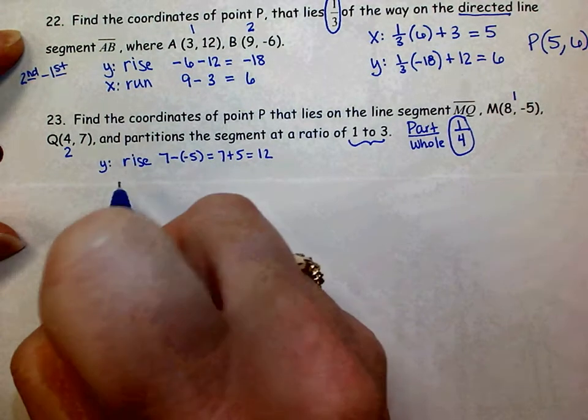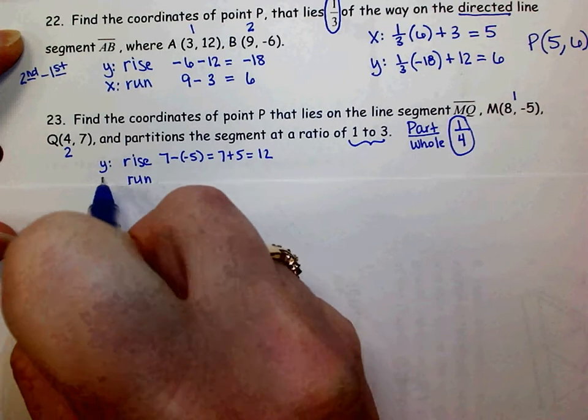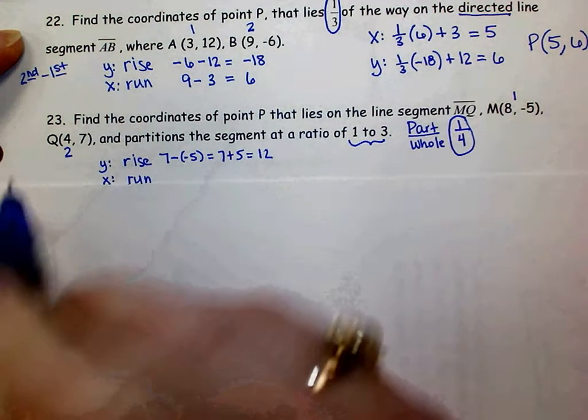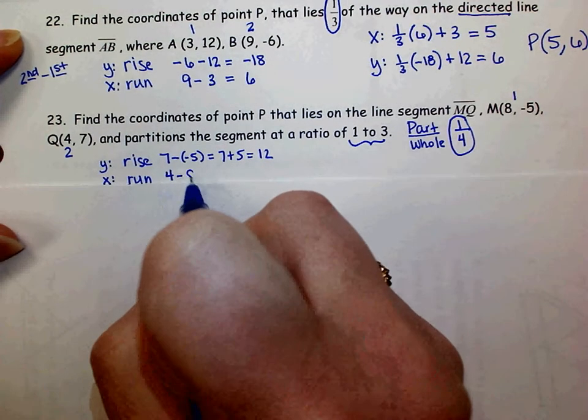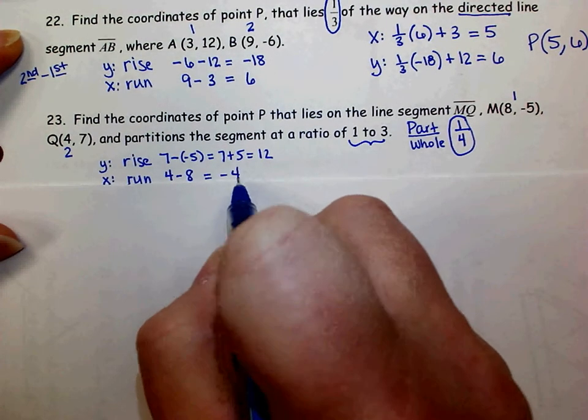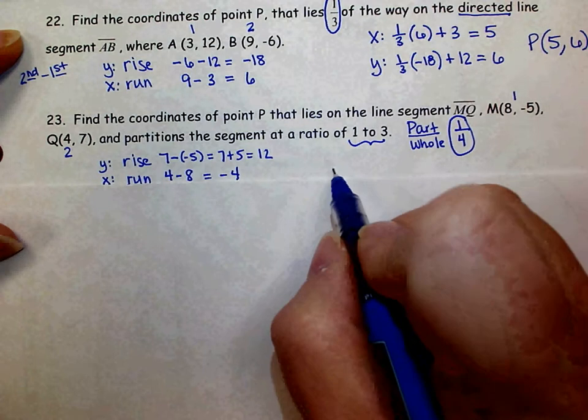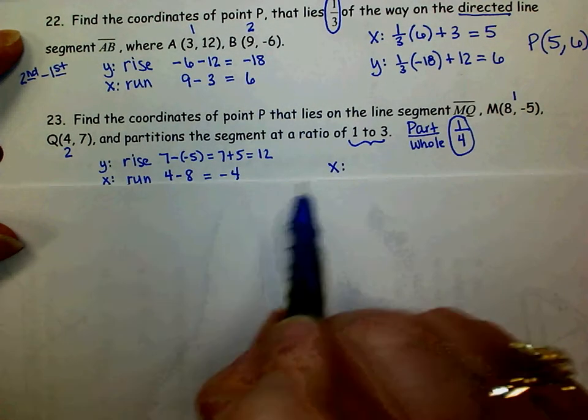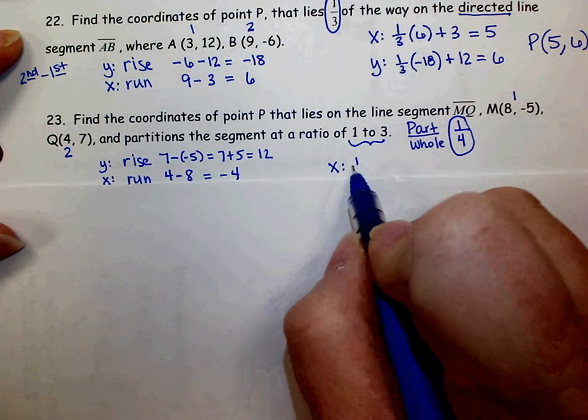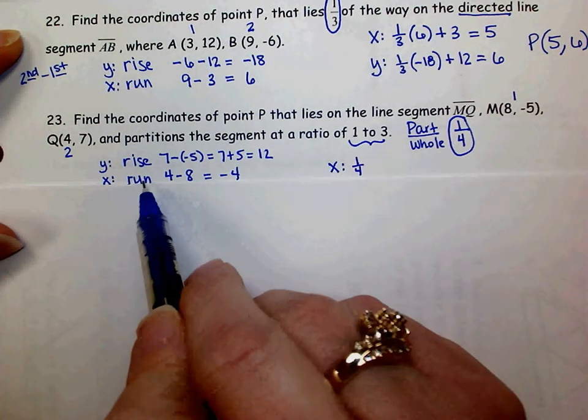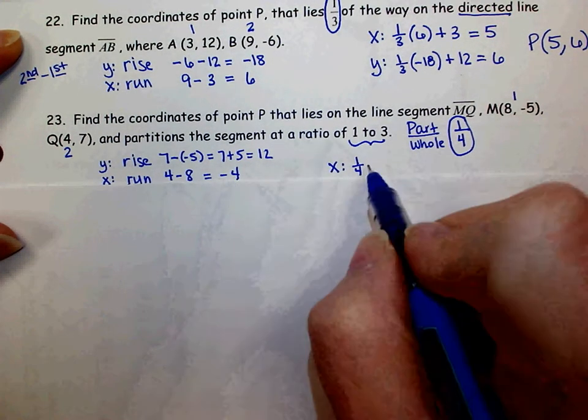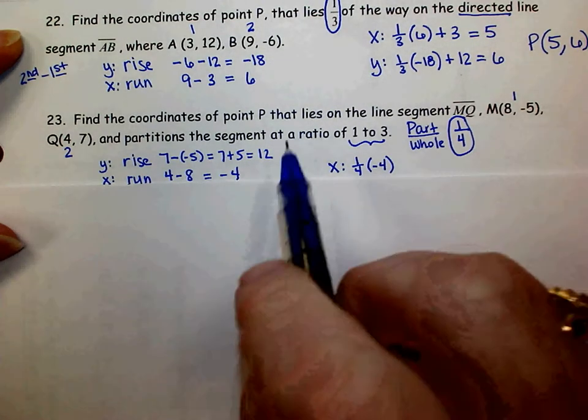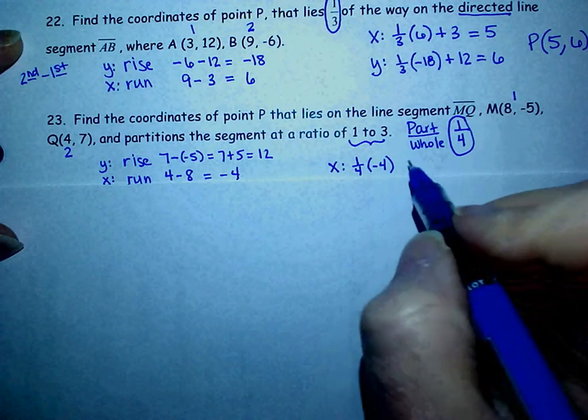My run, which comes from the x-coordinates, would be my second x minus my first x. So 4 minus 8, which is negative 4. So to find my x-coordinate of point P, I want a fourth of the run, because I'm doing x. So a fourth of negative 4. That's how far I'm going from the original point. So I'm going to add that to the 8.